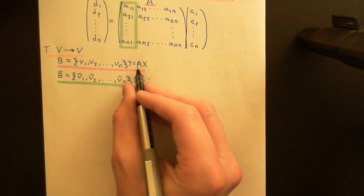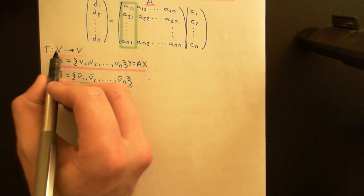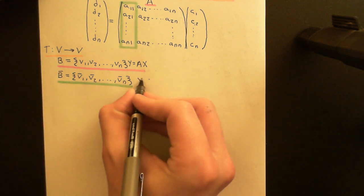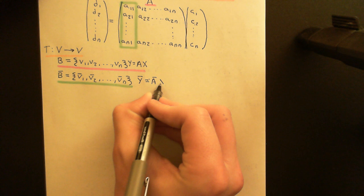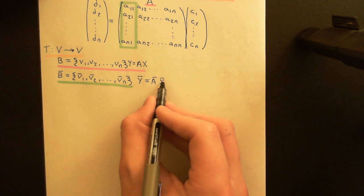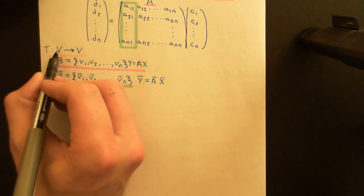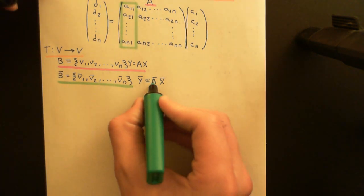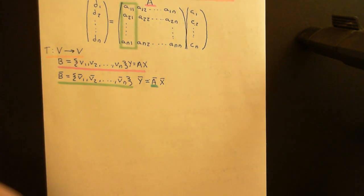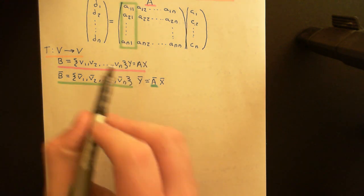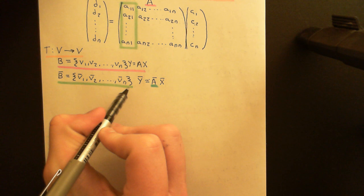What I now want to find is the matrix that will take a coordinate vector in the domain vector space and map it onto the appropriate coordinate vector in the codomain vector space, consistent with the linear operator. So what I want to find is the equation Y-bar = A-bar × X-bar, where X-bar is the coordinate vector with respect to the new basis B-bar, and Y-bar is the coordinates of the output vector with respect to B-bar.